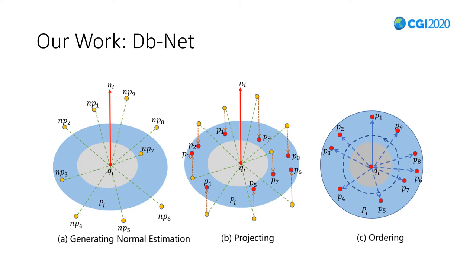C illustrates ordering in building angular feature graphs. After projection, we randomly pick a projected point as the start point and calculate counterclockwise angles between start point and other projected points. Then we order neighboring points NPi by the associated angle.